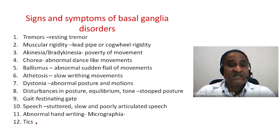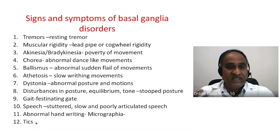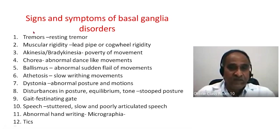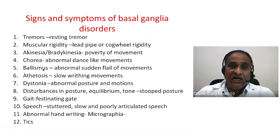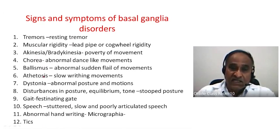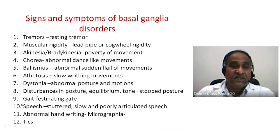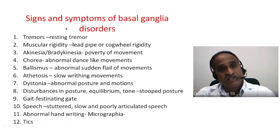Twelfth are tics — abnormal movements of the eyeball, tongue, or facial muscles. To summarize the signs and symptoms: tremors, rigidity, akinesia/bradykinesia, chorea, choreatic movements, ballismus, athetosis, dystonia, altered posture and equilibrium, altered gait, altered speech, micrographia, and tics.